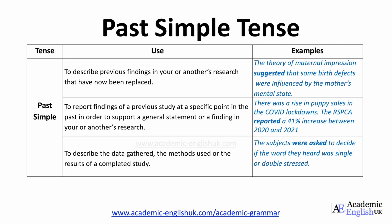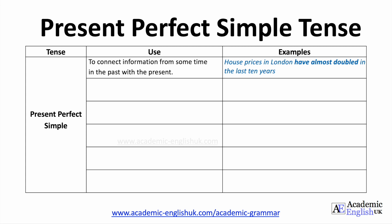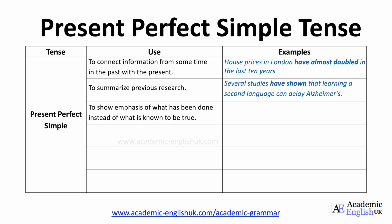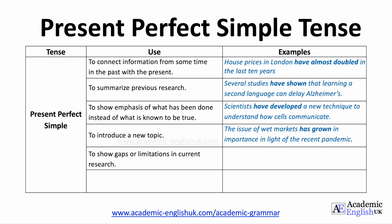Now we'll look at the present perfect simple tense. This tense has great significance in academic writing due to six main uses: to connect information from sometime in the past with the present, to summarize previous research, to show emphasis of what has been done instead of what is known to be true, to introduce a new topic, to show gaps or limitations in current research, and finally to draw conclusions.